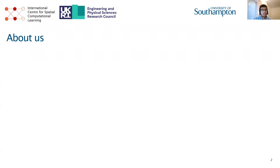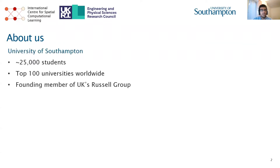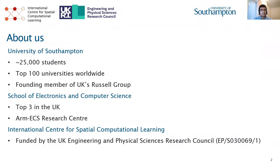A short introduction to the University of Southampton: we have around 25,000 students and we are in the top 100 universities worldwide. The University of Southampton is also one of the founding members of the UK Russell Group of Universities. The School of Electronics and Computer Science is top three in the UK and also home of the ARM ECS Research Centre. This work was done under the umbrella of the International Centre for Spatial Computational Learning, funded by the UK Engineering and Physical Sciences Research Council.